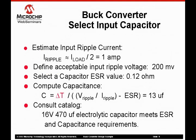The worst-case ripple current occurs when the duty cycle is 50%, and the worst-case ripple current on the input of the buck converter is about one half of the load rated current. Like the output capacitor, the input capacitor selection is primarily dictated by the ESR requirement needed to meet voltage ripple requirements. Usually the input voltage ripple requirement is not as stringent as the output voltage ripple requirement. In this example, the maximum input voltage ripple is defined as 200 millivolts.